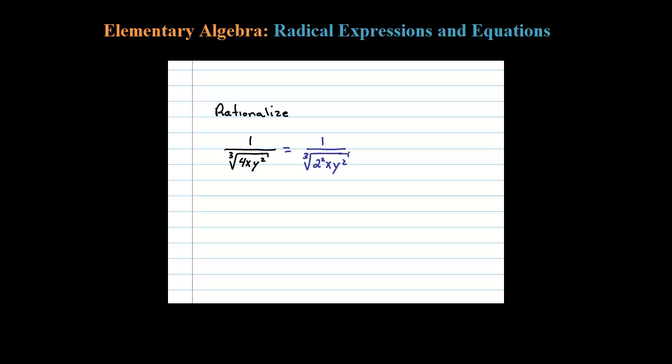Now to rationalize this, I'm going to multiply by what I need to eliminate the radical in the denominator by bringing those exponents up to the index, in this case 3. So I'm going to multiply by 2 to the 1 power, x squared, and Y.